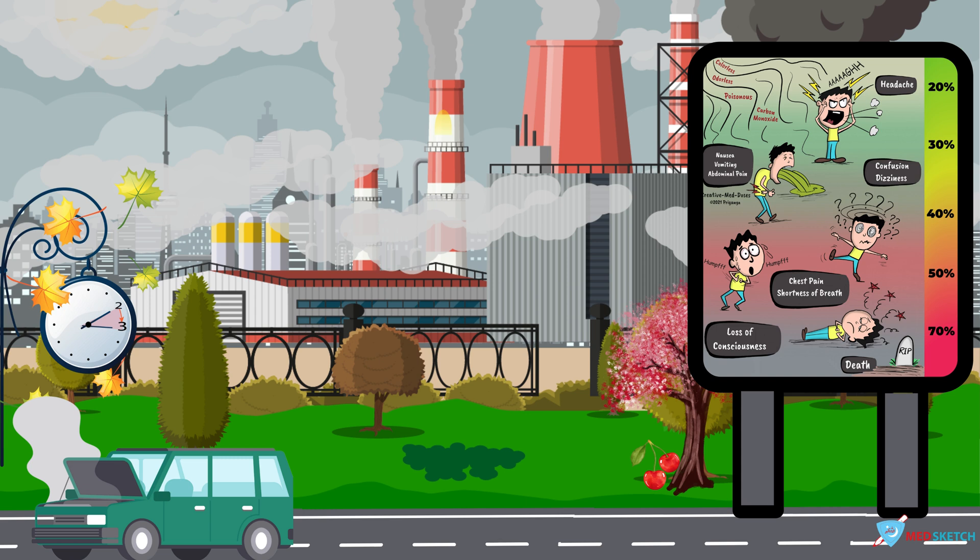In order to remove the carboxyhemoglobin, we have to provide with supplemental oxygen. You can see oxygen cylinders just beneath the board. The main area would be to improve the cerebral and cardiac perfusion by removing the carboxyhemoglobin from the system and replacing it with oxygen.